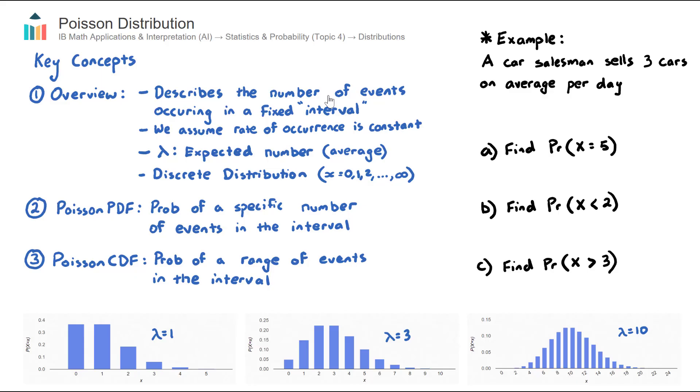We assume that the rate of occurrence is constant, so every additional day the average is three. And even within that day, if we took half a day, we could say that the average cars the car salesman sells is 1.5.